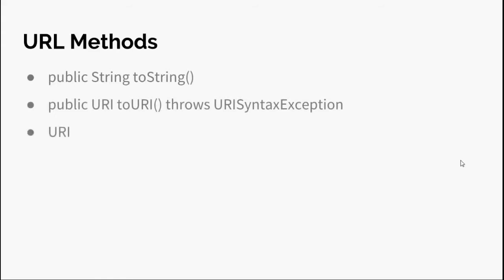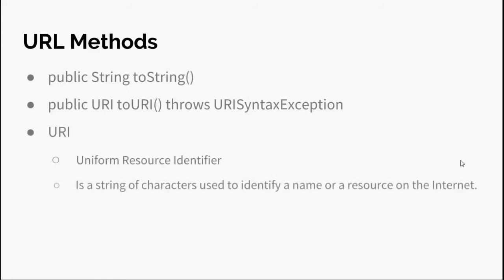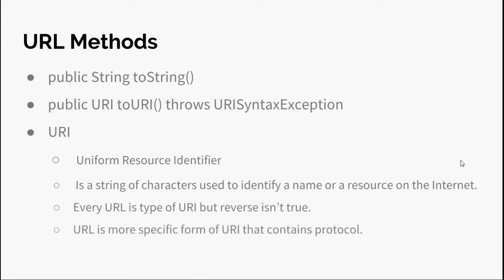toURI() throws URISyntaxException and returns the URI equivalent of the URL. URI stands for Uniform Resource Identifier — it is a string of characters used to identify a name or resource on the internet. Every URL is a type of URI, but the reverse is not true. A URL is a more specific form of URI that contains a protocol, so URL = URI + protocol.